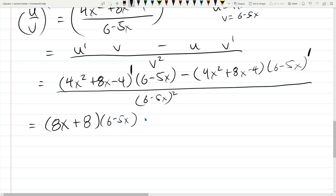So copy that down. Copy this down: 4x squared plus 8x minus 4. Derivative of 6 is 0. Derivative of negative 5x is just negative 5, divided by 6 minus 5x squared.